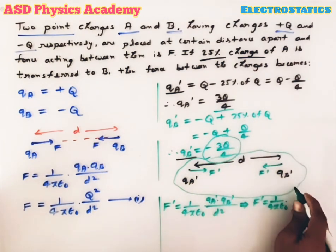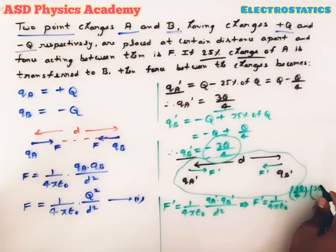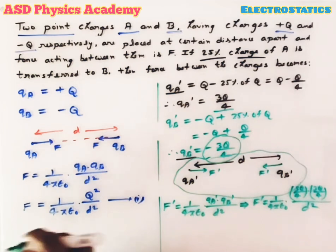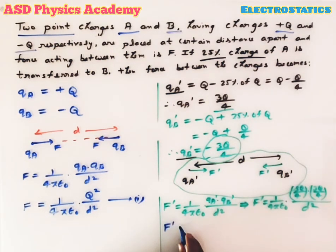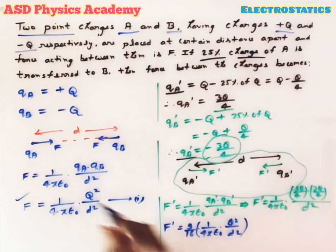F' = 9/16 × 1/(4πε₀) × q²/d². We know that 1/(4πε₀) × q²/d² is F.